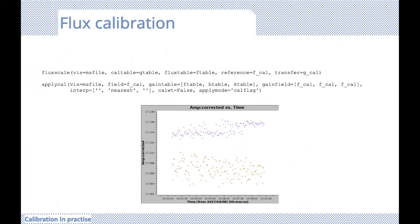CASA makes this easy with its flux scale task that performs the bootstrapping and calculation to derive the scale factors for the correlator-to-Jansky conversion. When we apply this to our observed data, we obtain not only the flux Jansky of our calibrators but the scale factor for the entire sky, giving us the flux density for all targets in our observed data.